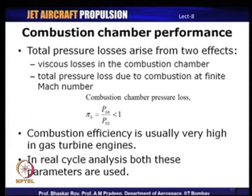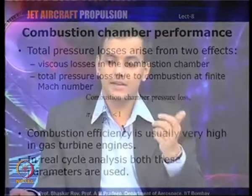In combustion chambers of gas turbine engines, the air-to-fuel ratio is very high, so combustion efficiencies are usually very high — on the order of 0.95 to 0.99. In real cycle analysis, both combustion efficiency and total pressure loss are used. Having looked at the intake, compressor, and combustion chamber, the next component to analyze is the turbine.